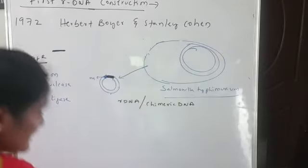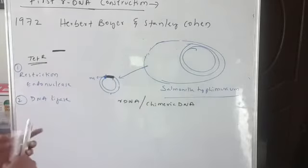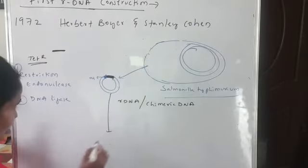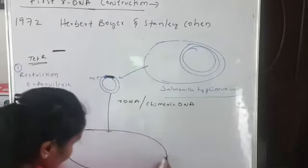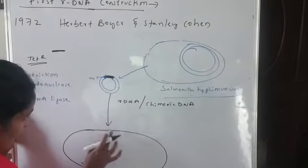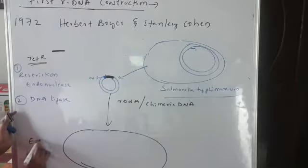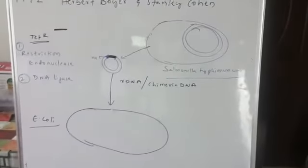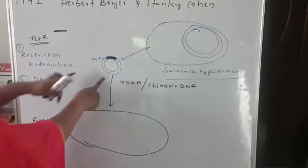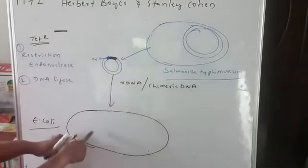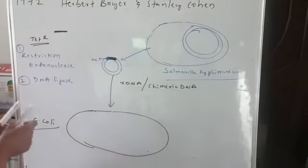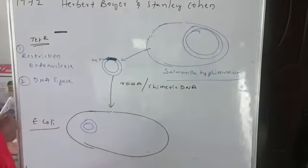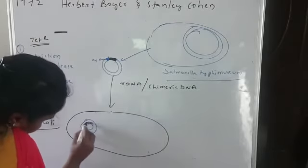Now they are transferring this R-DNA into the host. Who is the host? E. coli — Escherichia coli. They have chosen E. coli as the host. They are transferring this R-DNA into the E. coli bacteria. This R-DNA has now entered into the E. coli.